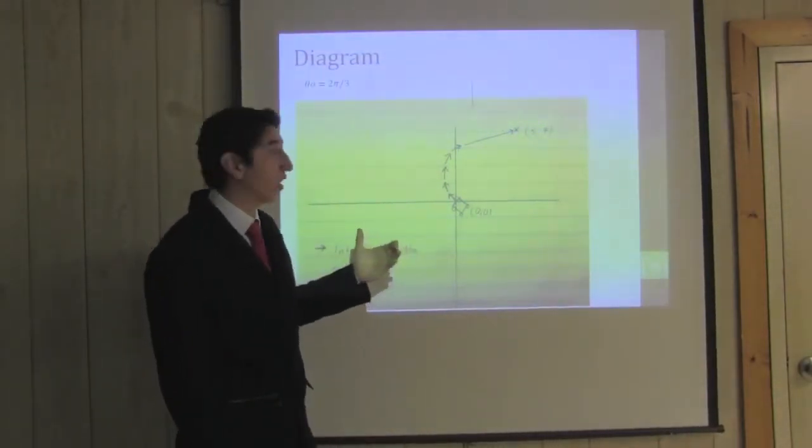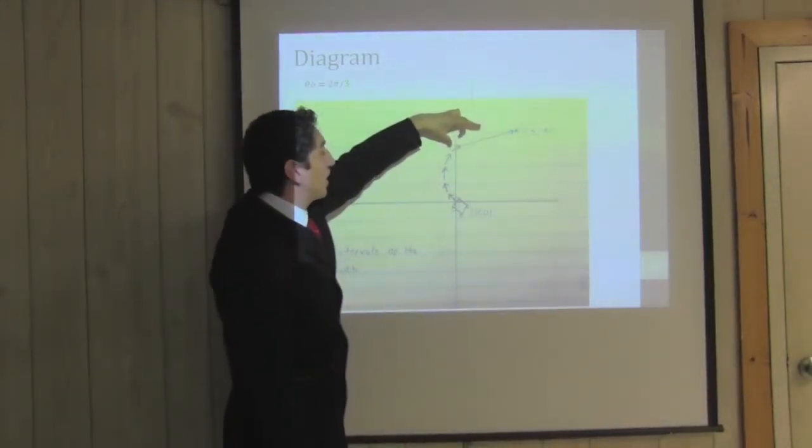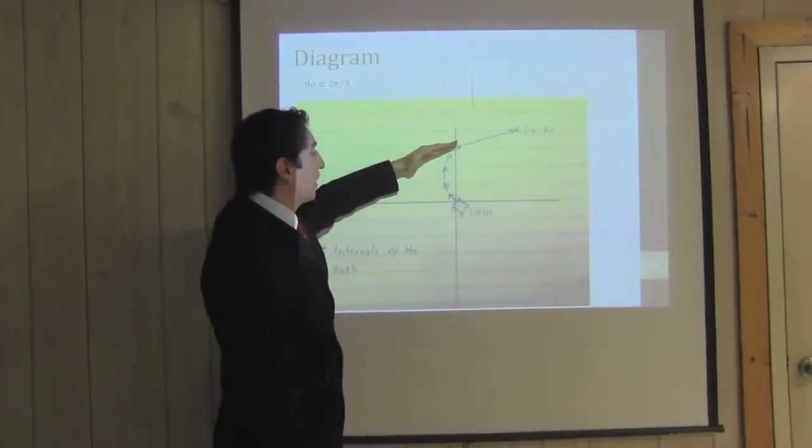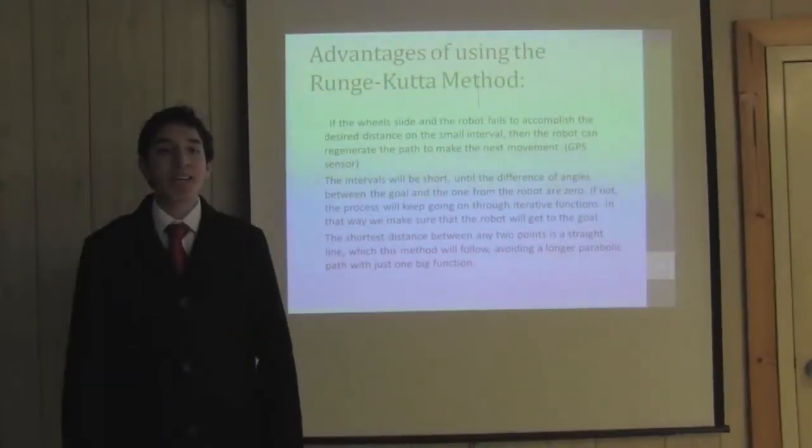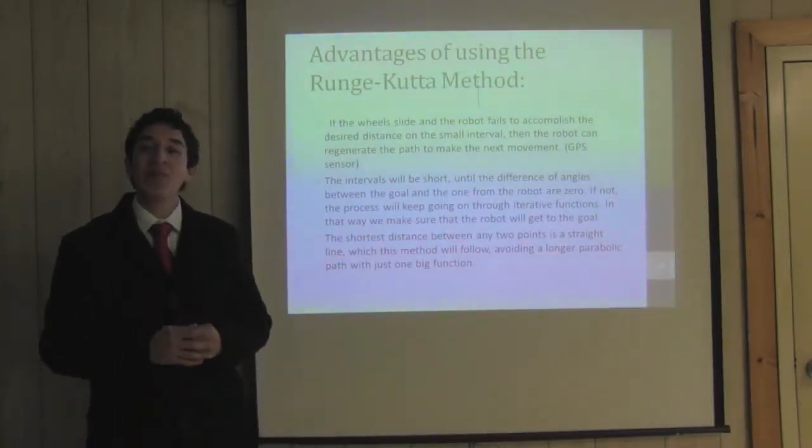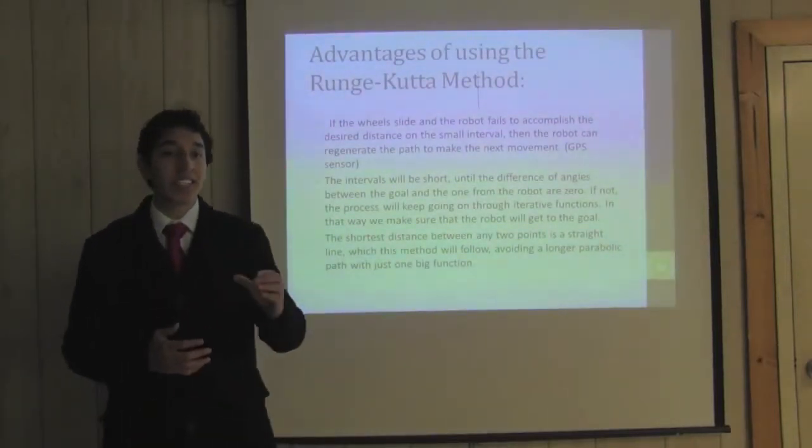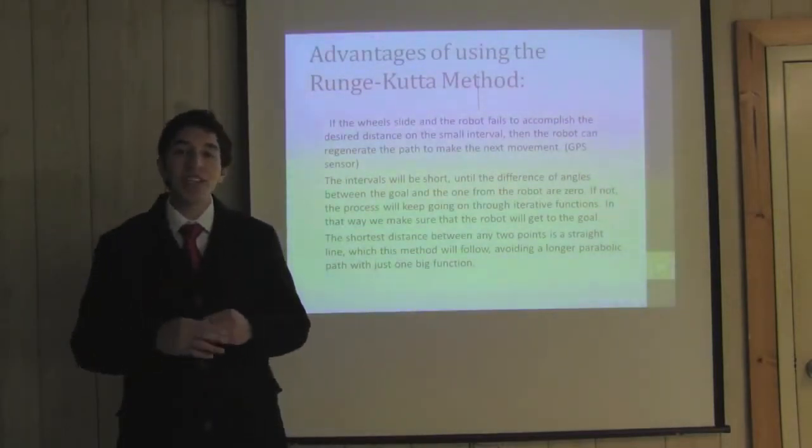When the difference of angle equals zero, we will recalculate the missing distance and move the robot in a straight direction until we get to the goal. This Runge-Kutta method is very useful, because if the wheels slide and the robot fails to accomplish the desired distance on the small interval, the robot can regenerate the path to make the next movement.